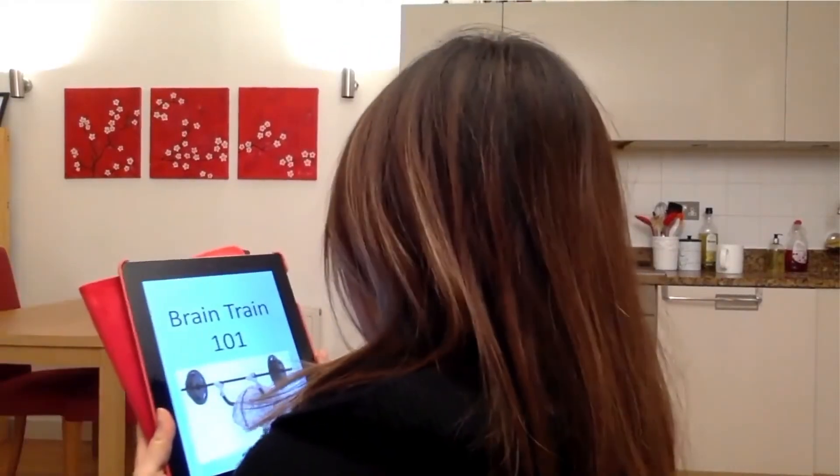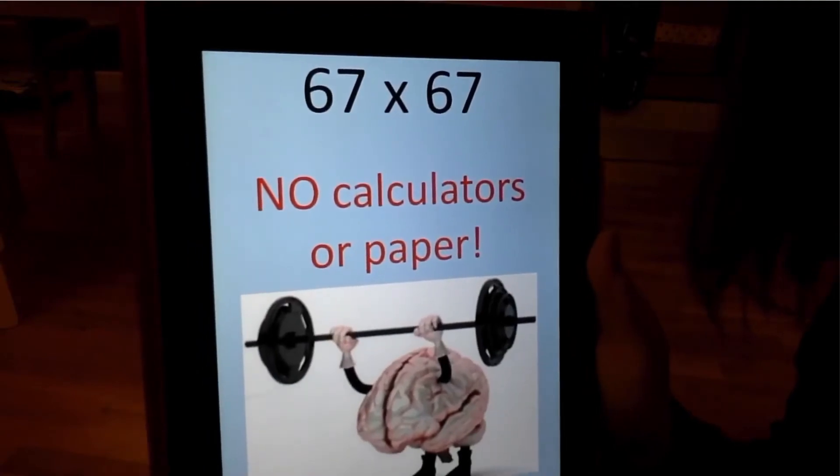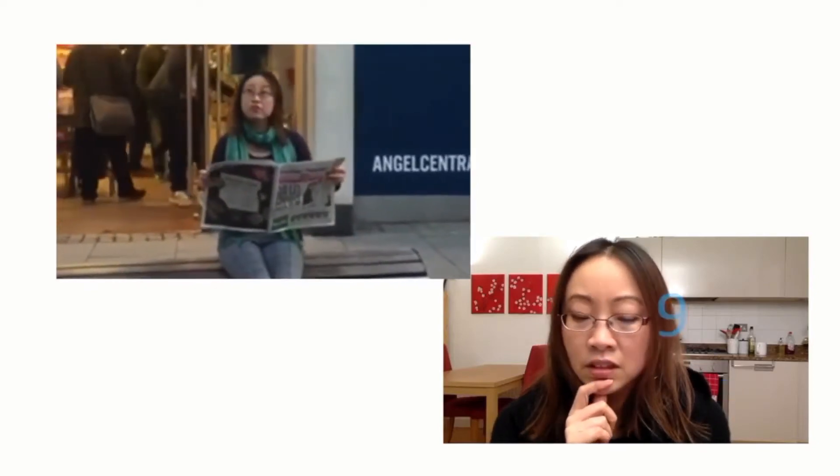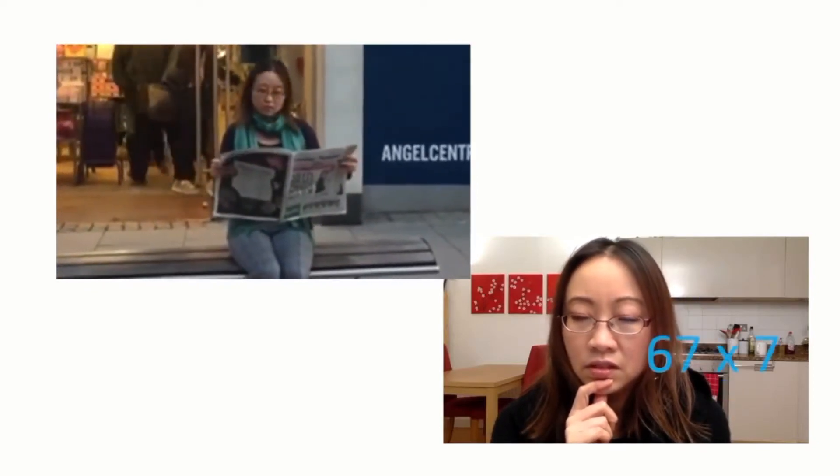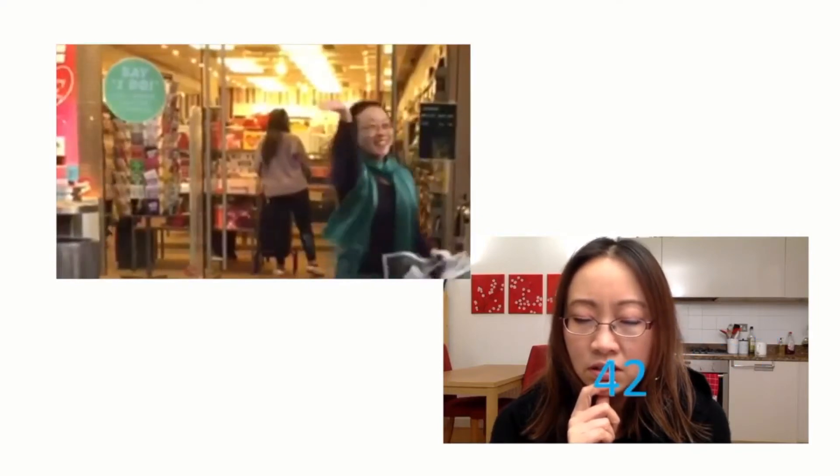For example, think of a task that you might traditionally consider difficult, like calculating 67 squared in your head. Well, from an information processing perspective, something that we consider trivial, like recognizing your friend across the street, is incomparably more difficult than calculating 67 squared.